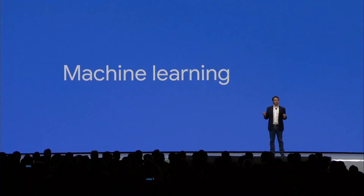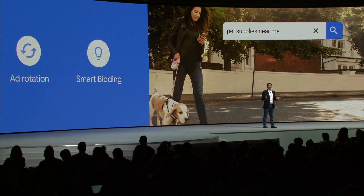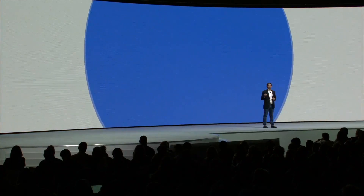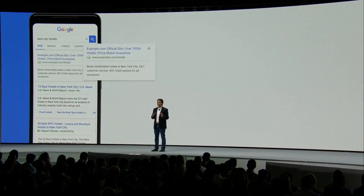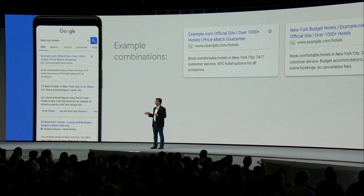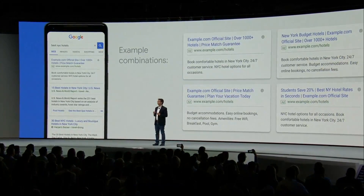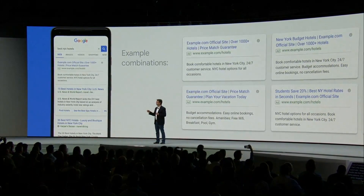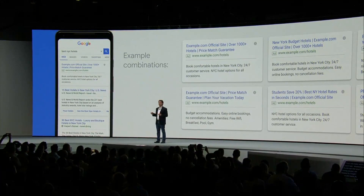No big surprise here — it's machine learning. That's why today we're introducing responsive search ads. Powered by Google's machine learning, these ads mix and match multiple headlines and descriptions to find the best possible combinations, making it easy for you to deliver unique and tailored messages to potential customers.